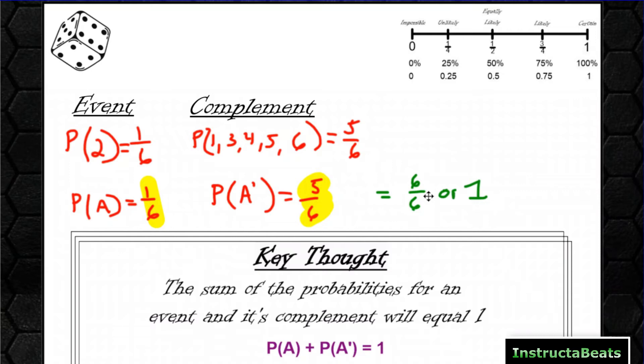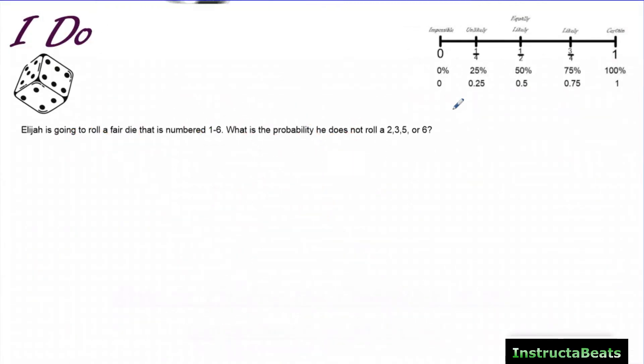Let's take a look at an I Do problem and how these types of questions will be asked. Our I Do problem says Elijah is going to roll a fair die that is numbered 1 through 6, that just means all the numbers are equally represented. What is the probability he does not roll a 2, 3, 5, or 6? In other words, it's asking us what is the complement for the event that he rolls a 2, 3, 5, or 6?